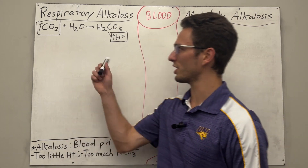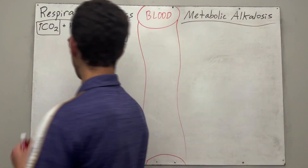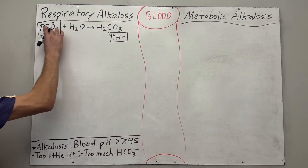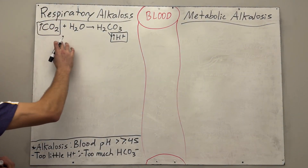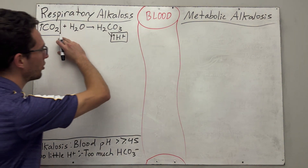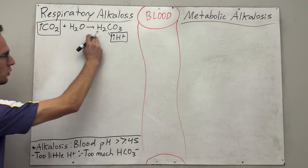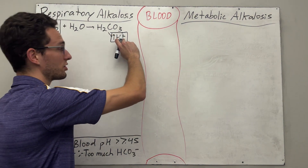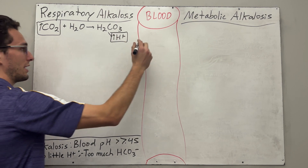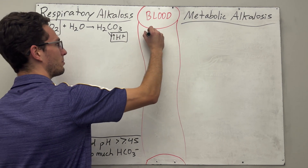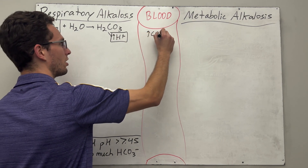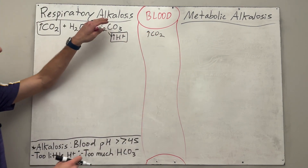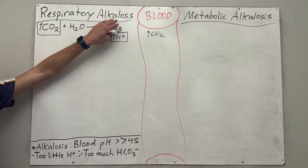First off, with the respiratory system — remember, whenever we have carbon dioxide, CO₂ will push a reaction making carbonic acid, which dissolves hydrogen ions into the solution. So if we have a decent amount of CO₂, we'll have a decent amount of acid. But here's the thing — we're talking alkalosis.